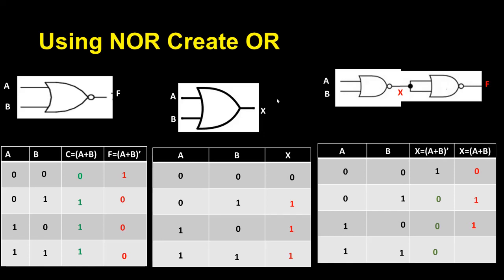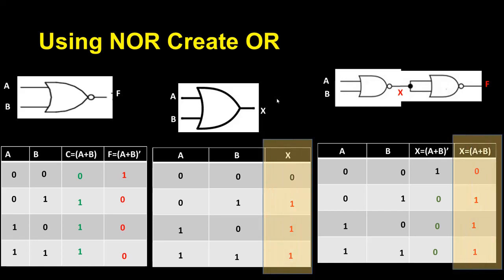The outputs are 0, 1, 1, 1. Finally you can see both outputs are the same — meaning using a NOR gate you can create an OR gate.